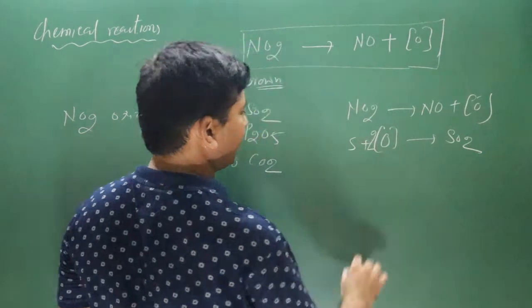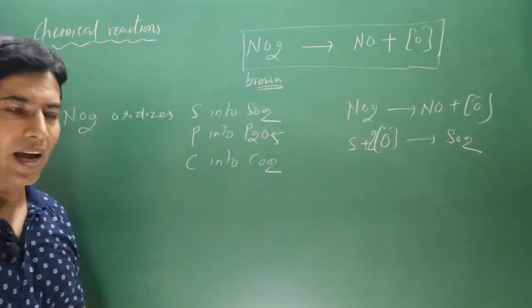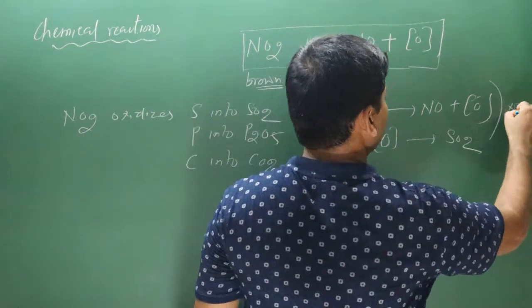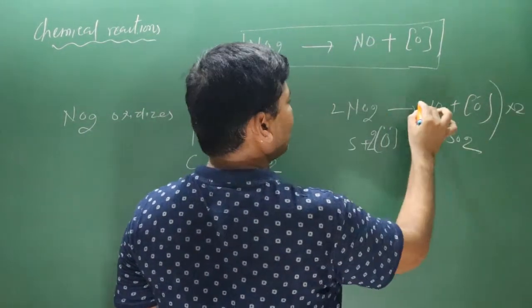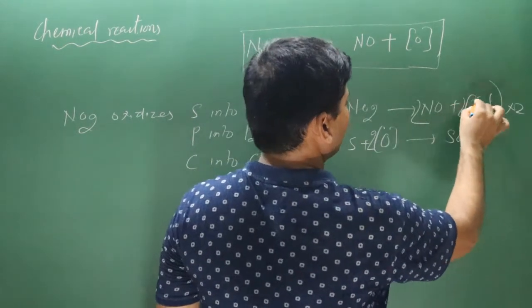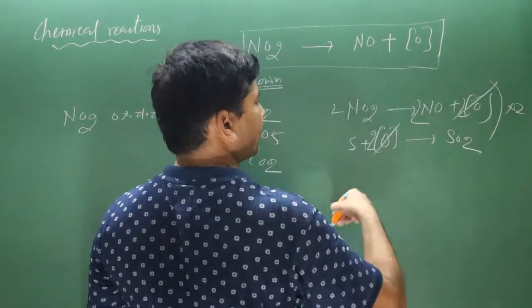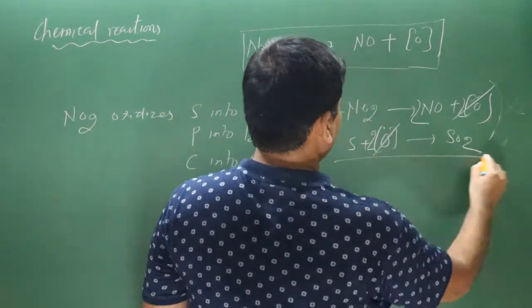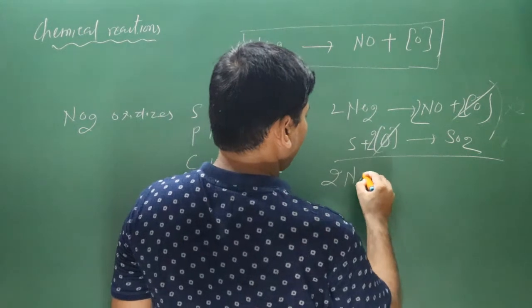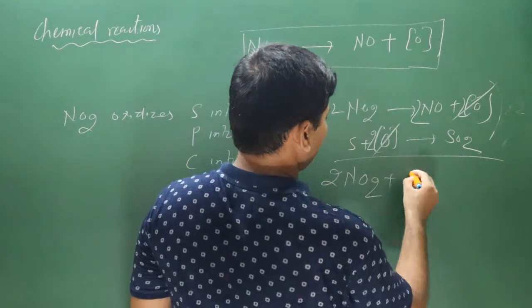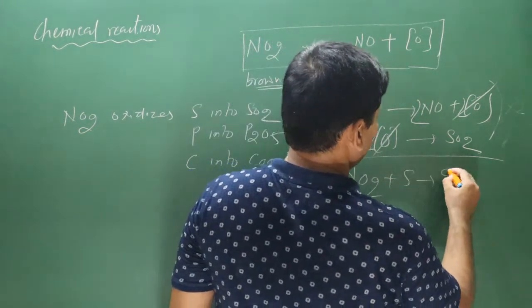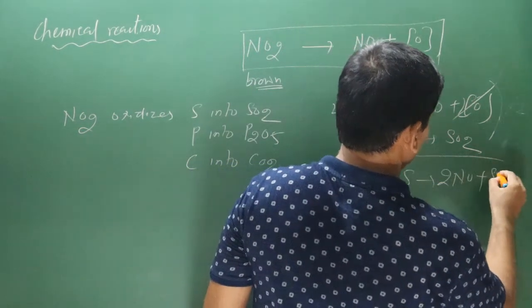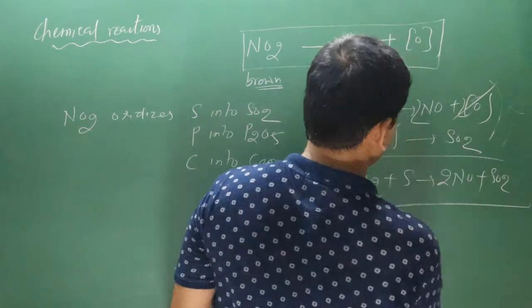Balancing nascent oxygen and multiplying by 2: 2NO2 + S → 2NO + SO2. The reaction is complete.